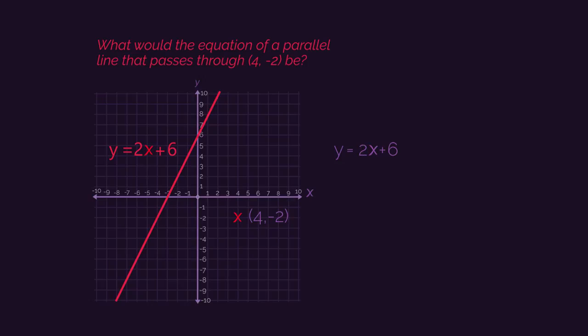Remembering that the gradient is the number in front of the x in the y equals mx plus c equation, so for a parallel line, we already know y equals 2x plus c. So now we just need to find the missing y-intercept c value. We take the coordinate from the question and substitute it in.